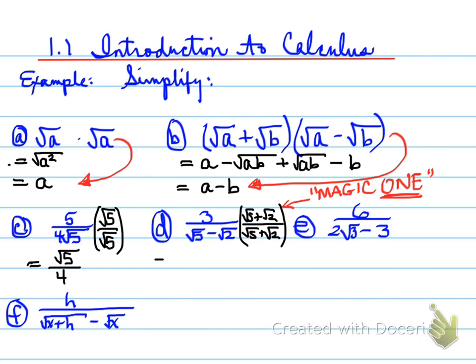That magic number one, when we multiply sideways, will turn out the denominator to be 5 minus 2. The 5 minus 2 turns out to be 3, which will cancel with this 3, and we will end up having root 5 plus root 2.